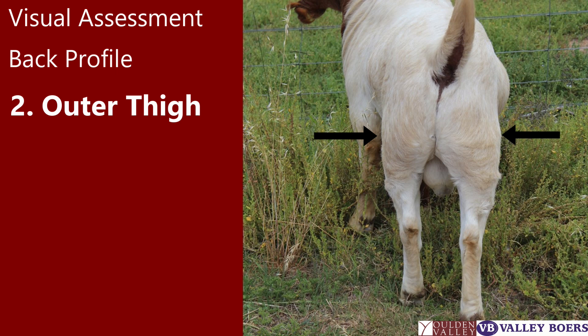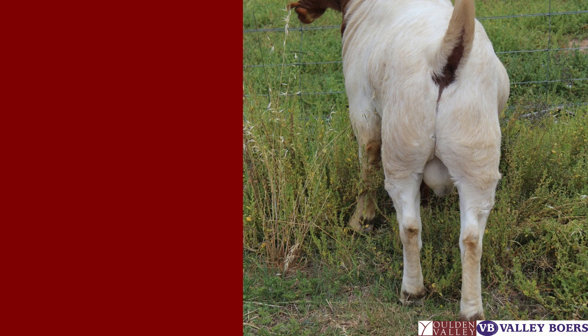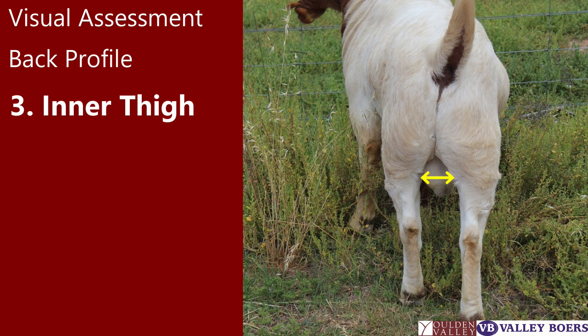You should be able to see the outer thigh muscle, otherwise called the twist, running down the leg. It should not be flat and empty. The inner thigh should be full and well fleshed. Many goats lack muscling in the inner and outer thigh.